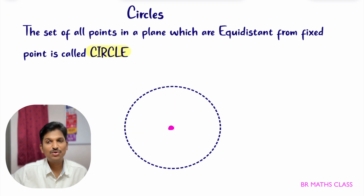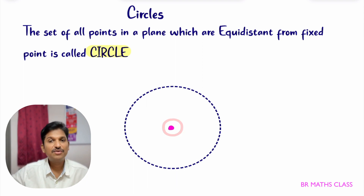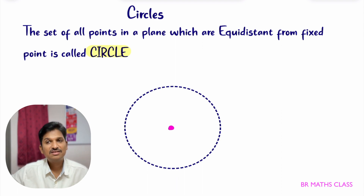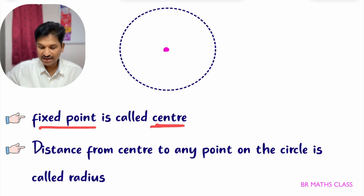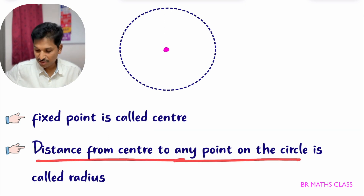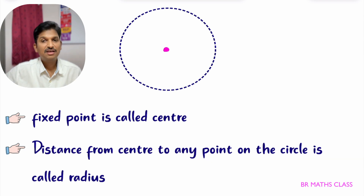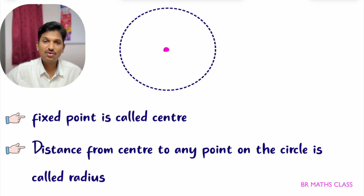So you have learned three things: first, the definition of circle; second, what is the center of a circle — the fixed point in the definition is called the center; and third, what is the radius — the distance from the center to any point on the circle is called the radius.